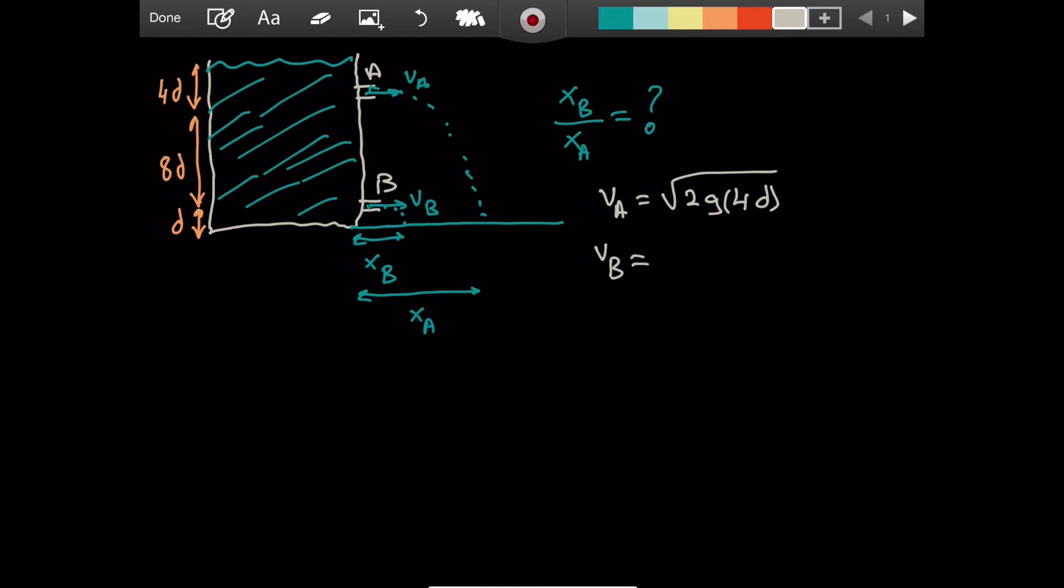What about vB? Well, vB will be equal to - we have 2g again. What is the depth in this case? 4d plus 8d, 12d. So we have, let's see. We have 2 times 2gd under the square root. And this one is going to be 24. So is it like 2 times 6gd? Yes, that is the case. Alright, so we got this. But this isn't enough.